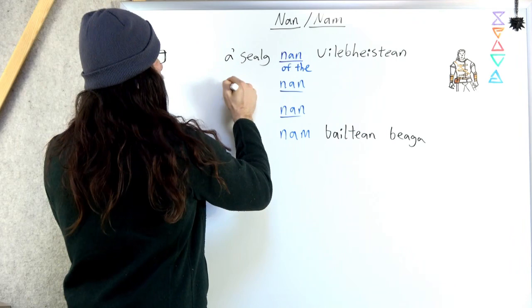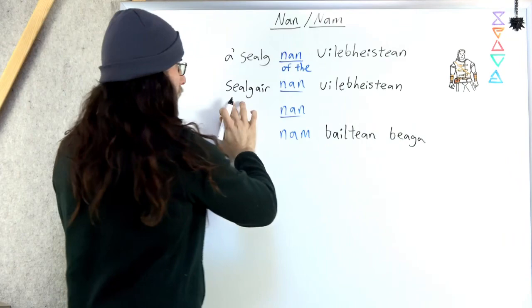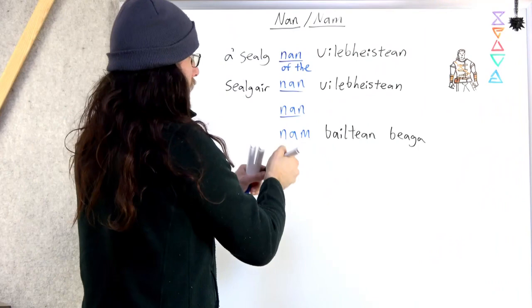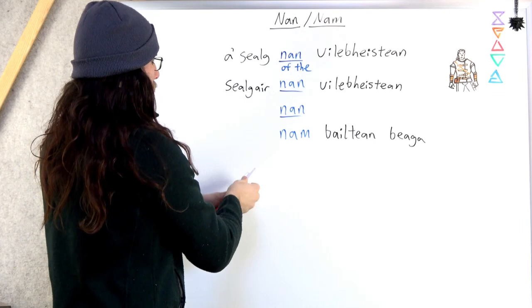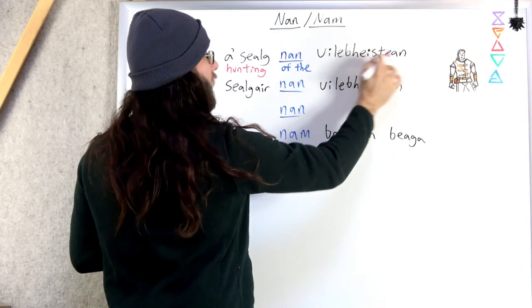Nan means of the. So we saw a shalak nan uleviščin. Or shalakar nan uleviščin. Either one here. A shalakar nan uleviščin. A shalak. Hunting. This is the action, the verb, right?